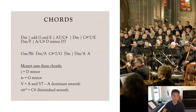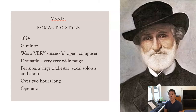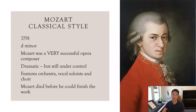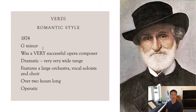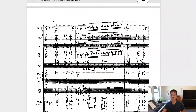Let's take a look at the Verdi. Verdi wrote this in memory of a poet and writer that he really admired. This is about 100 years later — 1874 for the Verdi, compared to 1791 for the Mozart. It's in G minor. Both Mozart and Verdi were extremely successful opera composers, and a requiem is perfect for these types of composers because the Requiem Mass is dramatic, especially in the Dies Irae. Verdi was writing in the Romantic period.